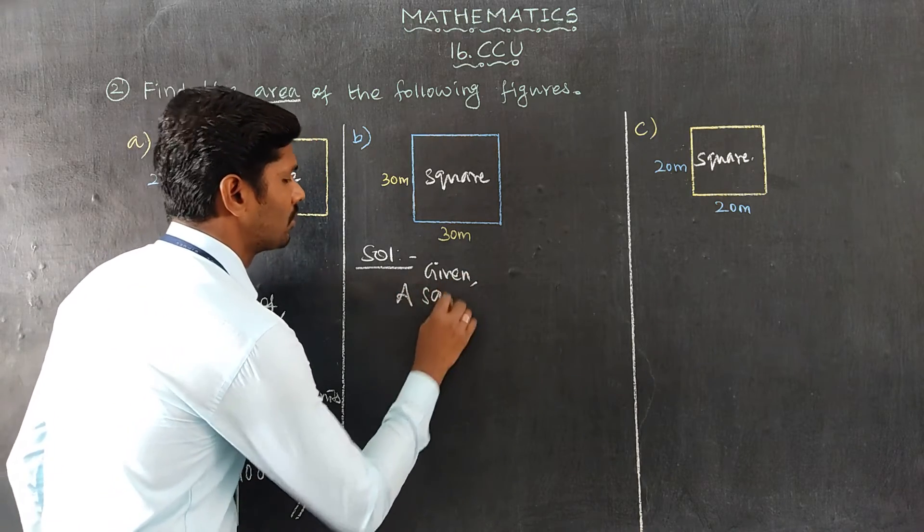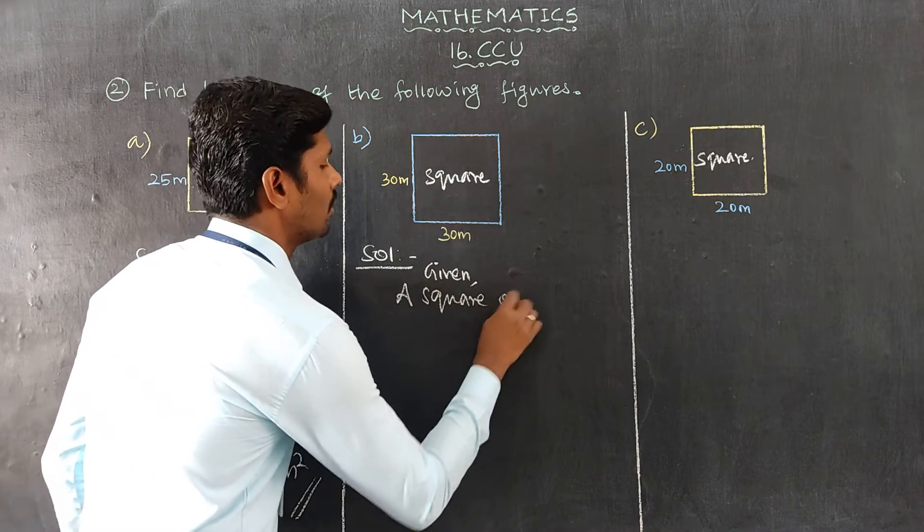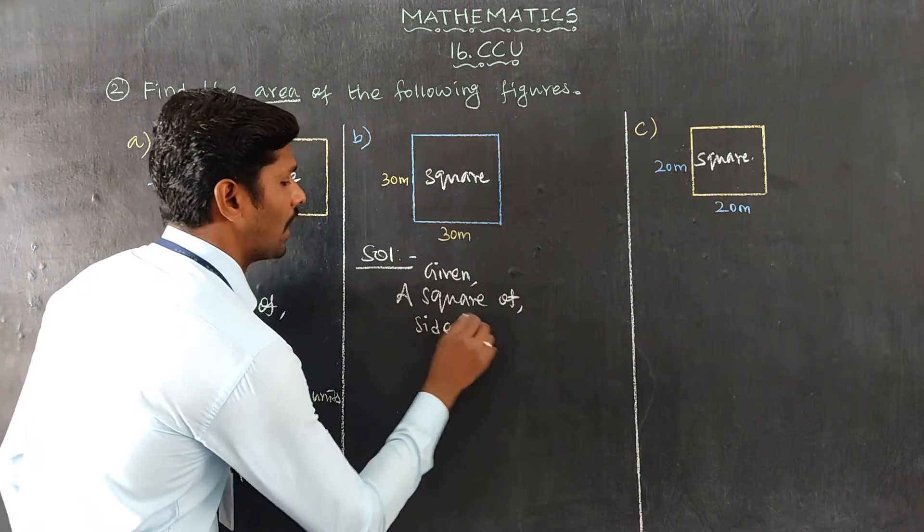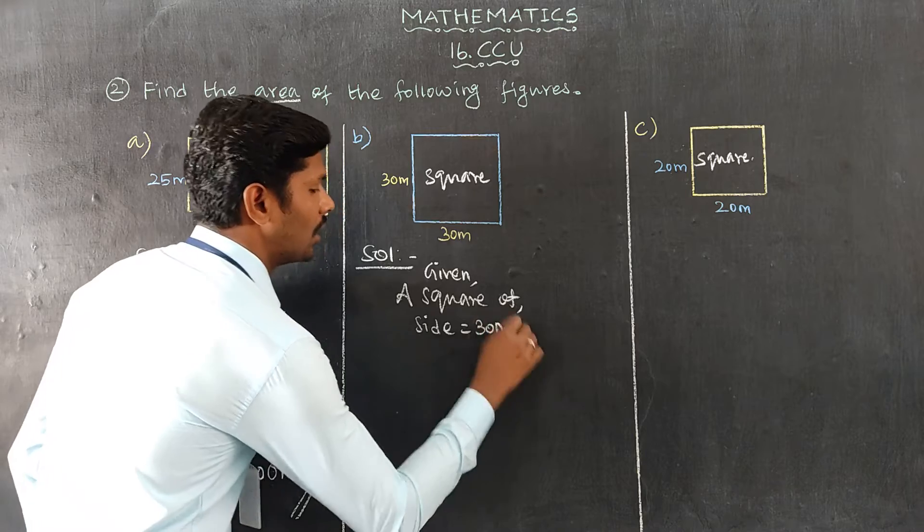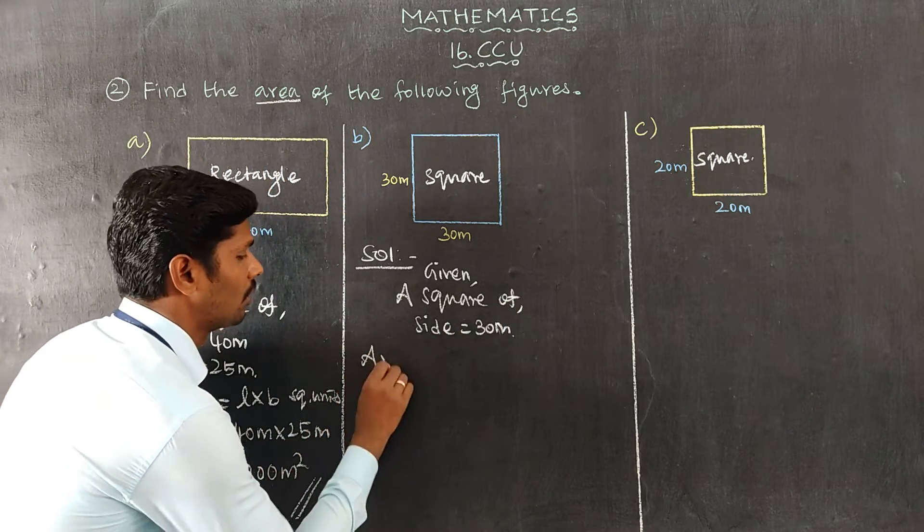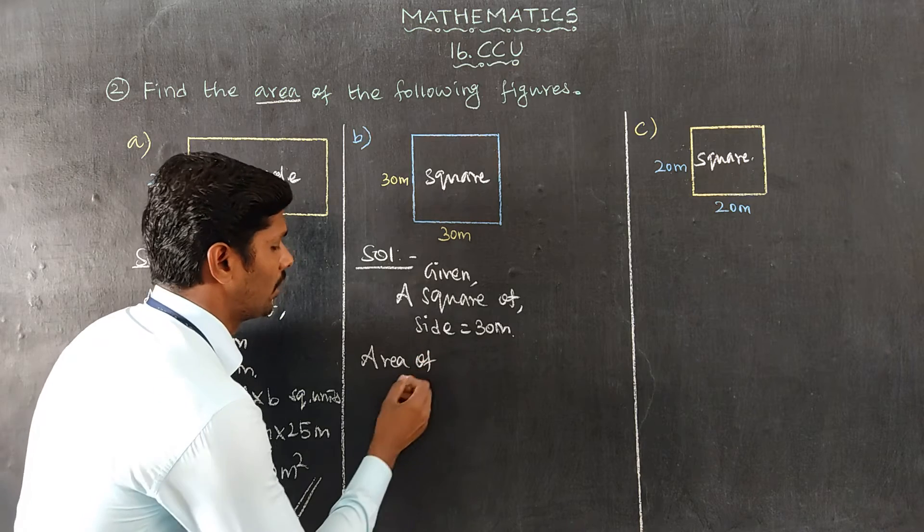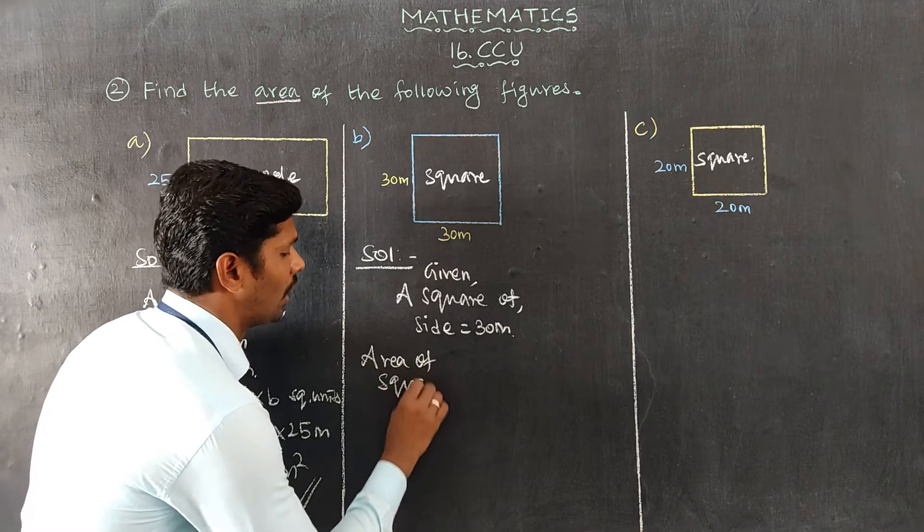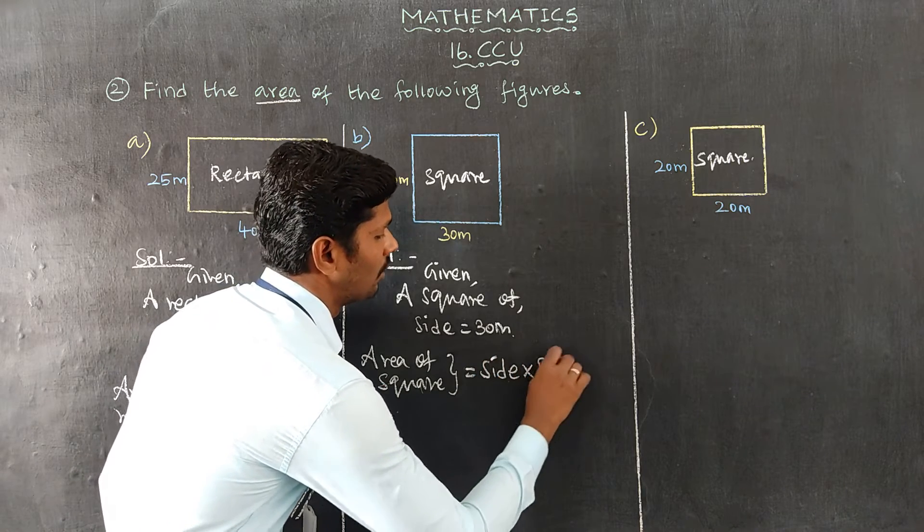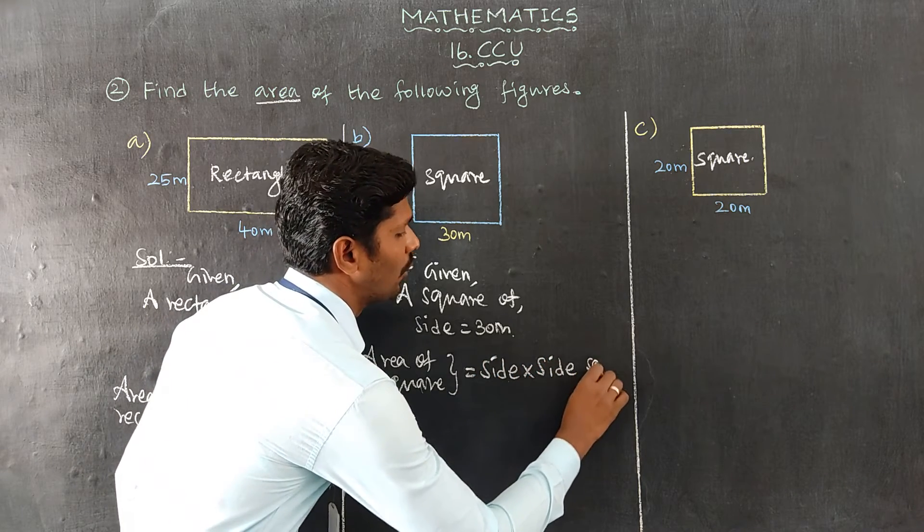Solution B: A square of side equal 30 meters. Now, area of square equals side into side square units.